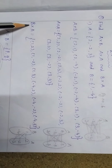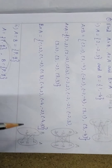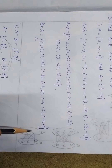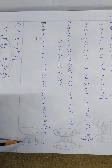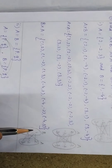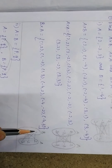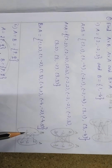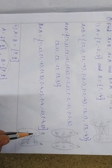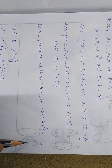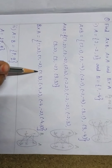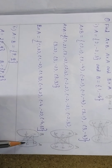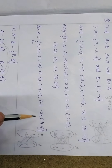Next we have to find B cross A. Here domain is B and co-domain is A. B has two elements and A has three elements. The element 1 is paired with all three elements of A: (1,2), (1,-2), (1,3). The element -4 is paired with all three: (-4,2), (-4,-2), (-4,3).